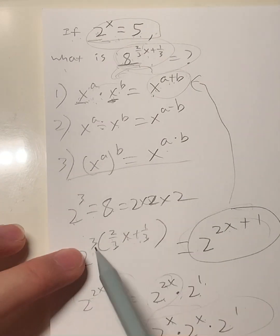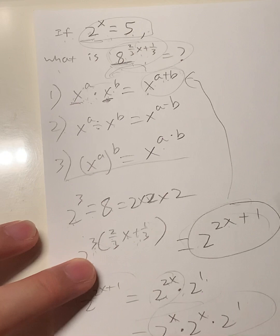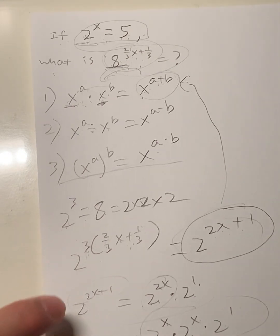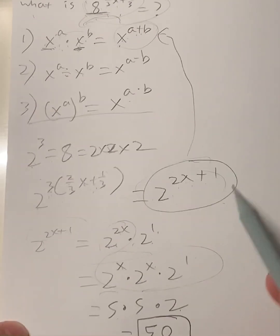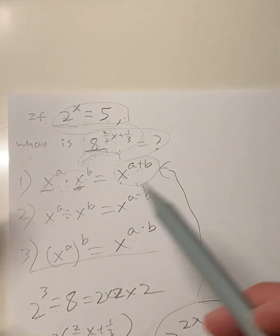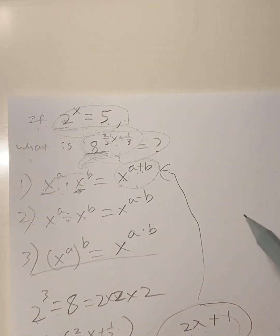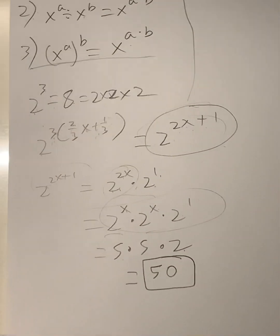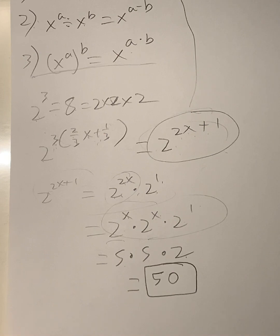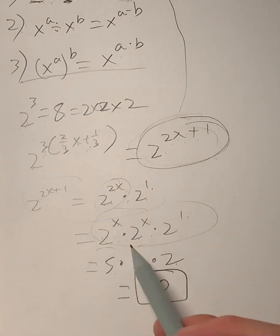Then we simplified by multiplying 3 with what's inside the exponents, giving us 2^(2x+1). We broke down 2^(2x+1) using our first rule. In this case, we didn't use rule number two because we didn't have division, but it's a good rule to remember. We broke down every single step, ending up with 2^x times 2^x times 2^1, which equals 2^(2x+1). We substituted our values, 2^x equals 5, so it's five times five times two, giving us a solution of 50.